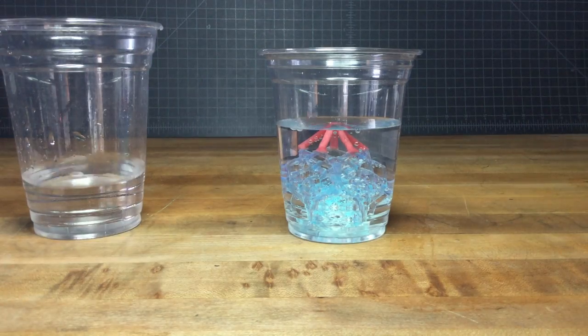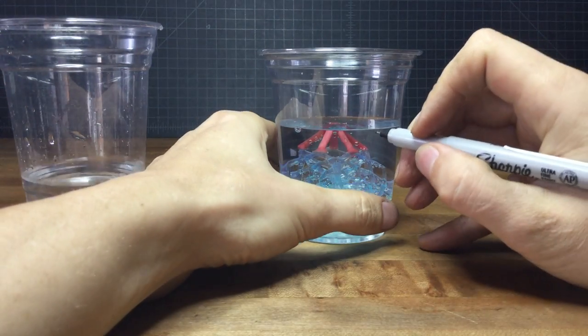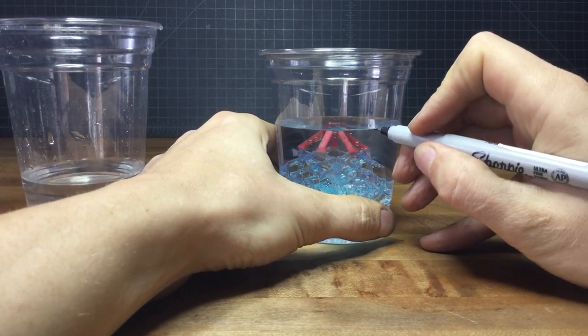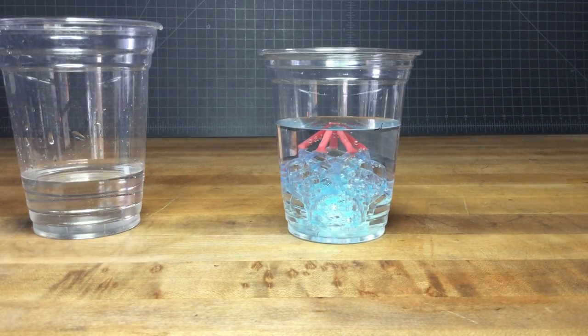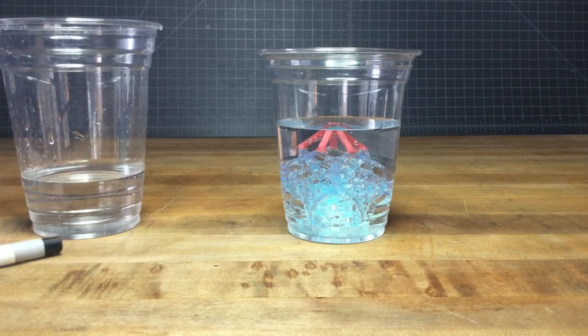And then we're going to mark with a Sharpie. Generally a fine-tipped Sharpie is going to give you more accuracy in your change of water level. And then we can just remove our part.